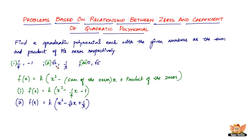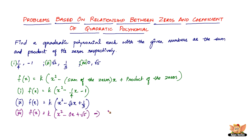Then we've got the third one: f(x) equals k times x squared, minus zero times x — so that term becomes zero — plus root five. This simplifies to k times x squared plus root five.